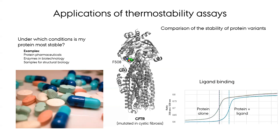Thirdly, thermostability assays are also commonly used to study protein-ligand interactions, based on the fact that a binding interaction will stabilize the protein and thus shift the melting point, which can be used to screen for interactors in a high-throughput manner.